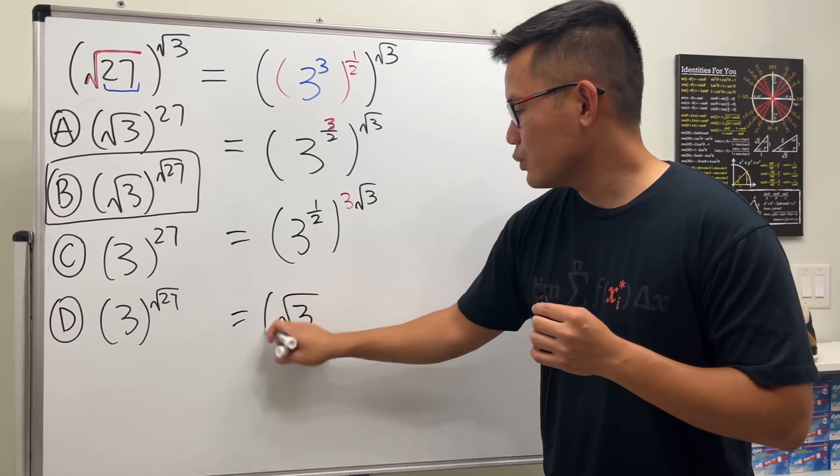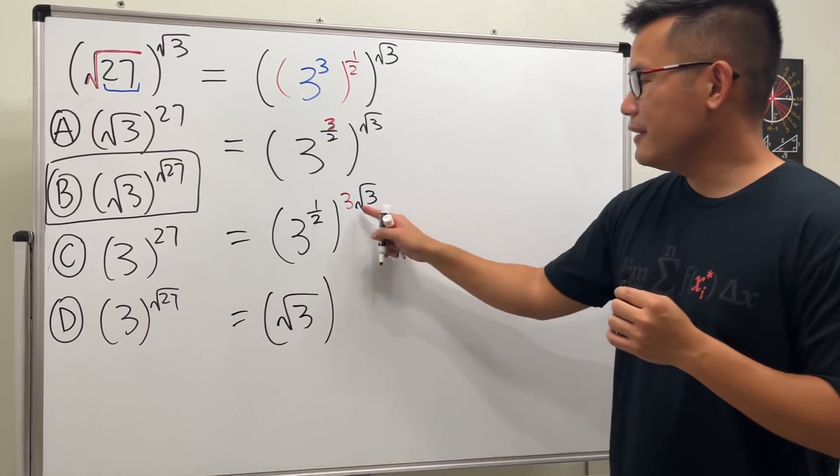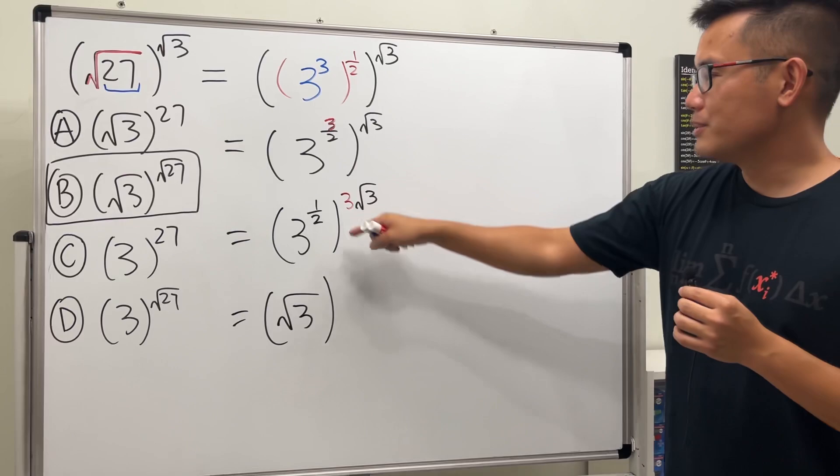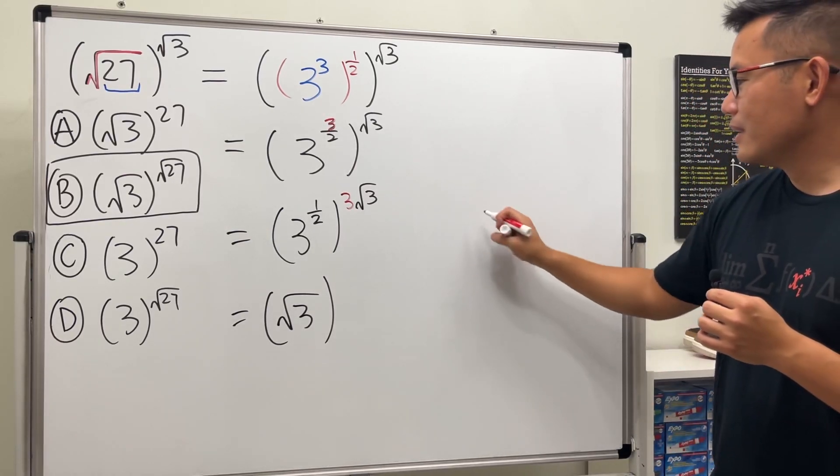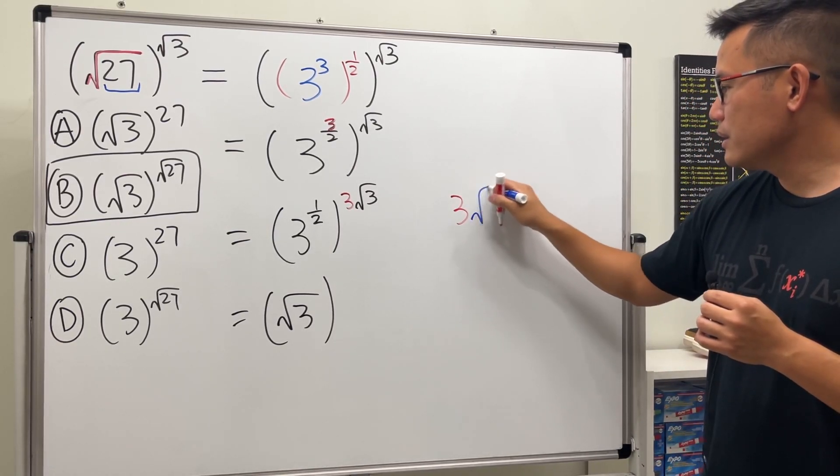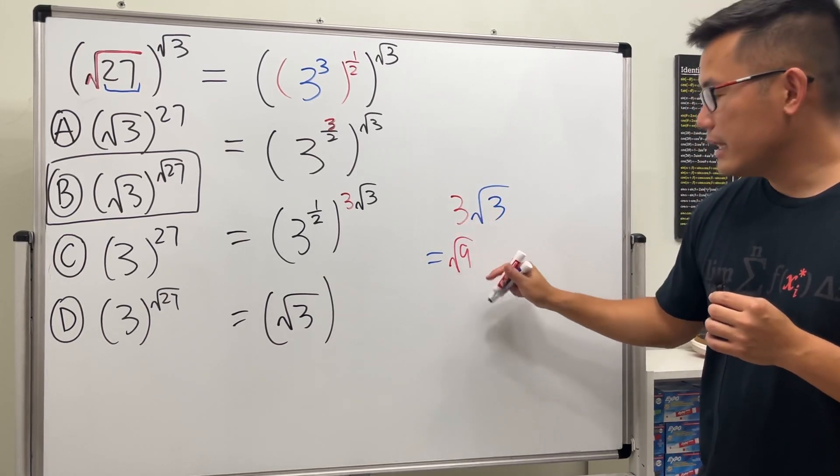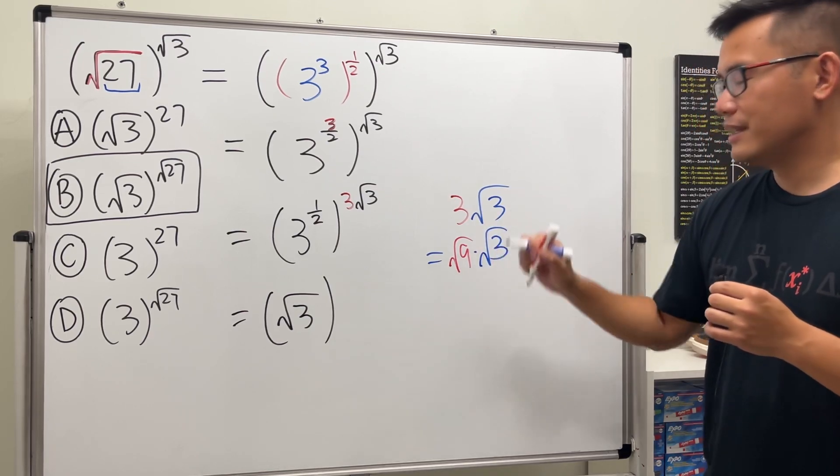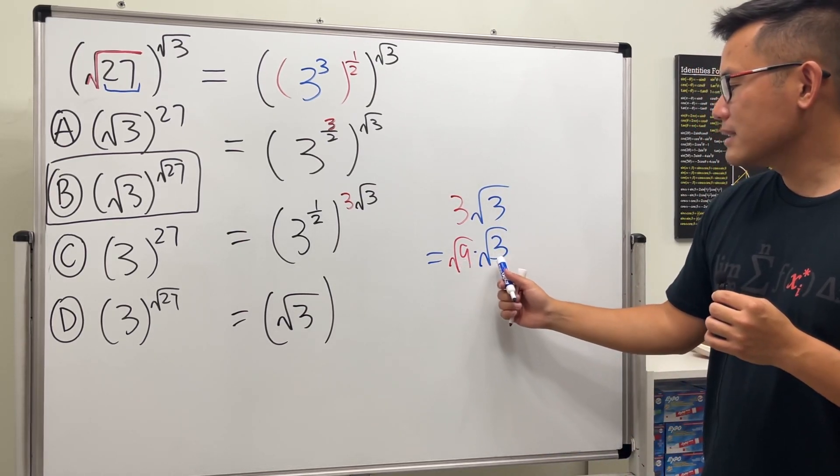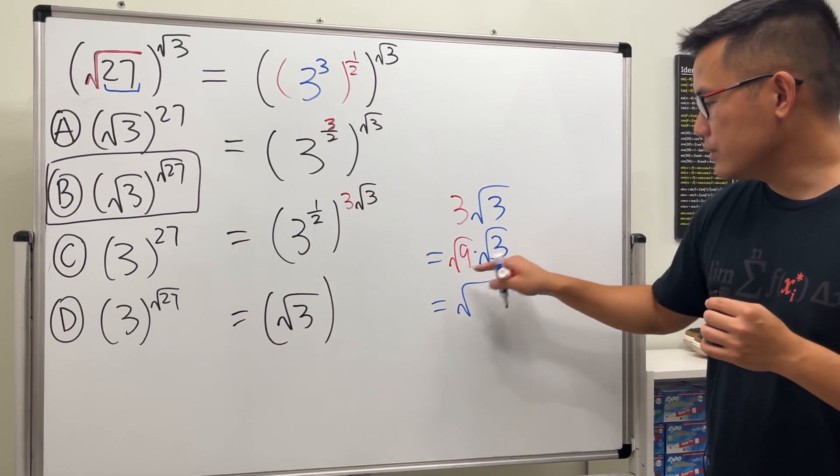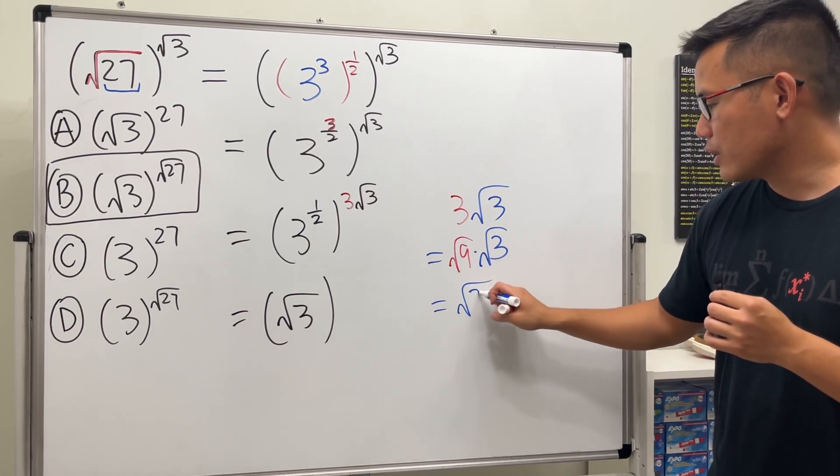And then in fact, square root of 3 times 3, we can do the following. When we have 3 square root of 3, this 3 is the same as saying square root of 9, yeah, and then times square root of 3. And now they are both positive itself the square roots, we can actually just multiply them and we will just get square root, and keep that, and then 3 times 9 we get 27.